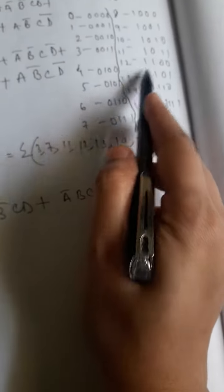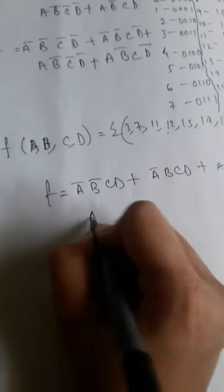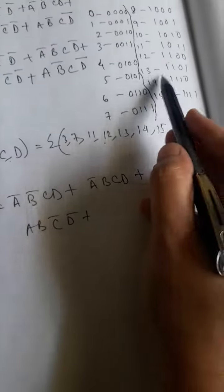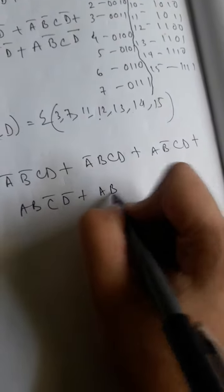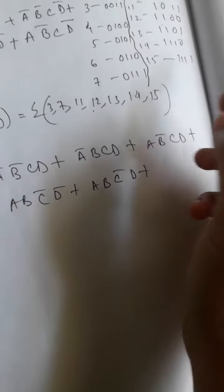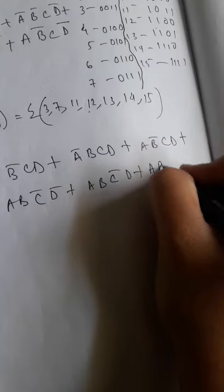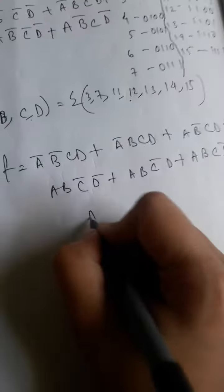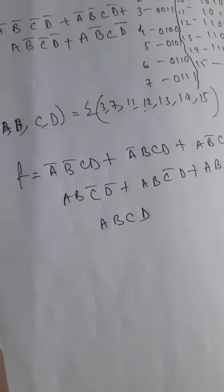12 is 1100, A B C bar D bar. 13 is 1101, A B C bar D plus. 14 is 1110, A B C D bar plus. 15 is 1111, A B C D.